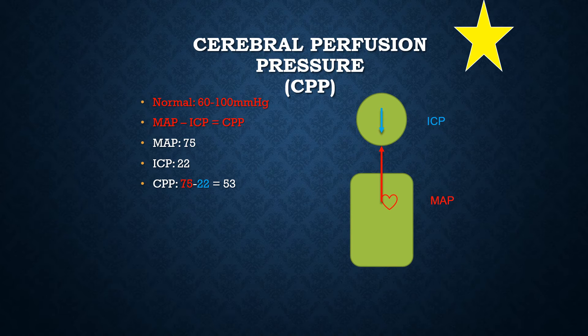So what needs to be done to help this patient? Because our MAP is normal, we need to take measures to reduce the ICP and get that back down to normal. So if we got our ICP down to 10 mmHg, now we're only subtracting 10 from 75 and our CPP is within normal range.